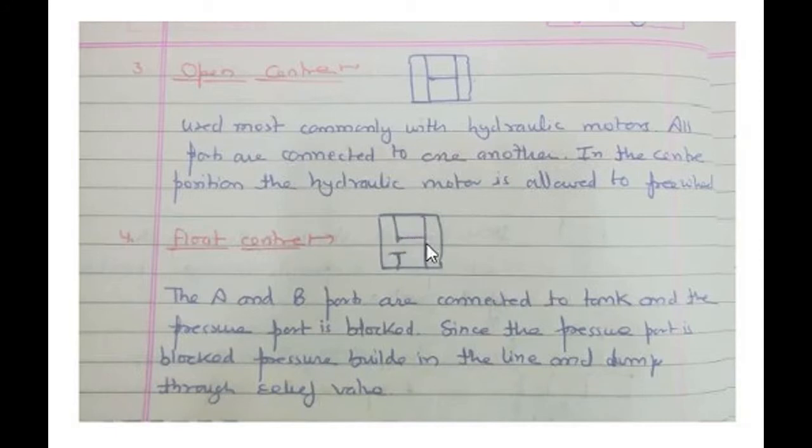Number four is float center, in which port A, B, and T are connected to each other and the pressure port is blocked. Since the pressure port is blocked, the pressure builds in the line and it has to be dumped through the relief valve.